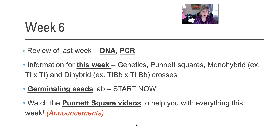A monohybrid cross — mono means one. I have an example here: a big T, little t, crossed with big T, little t, and then what offspring could you get? A dihybrid cross means you're looking at two separate genes, two separate traits, so you use two different letters. Uppercase and lowercase signify dominance and recessiveness in these traits. You're going to be working on some of these crosses through your biology project worksheet that you have due.